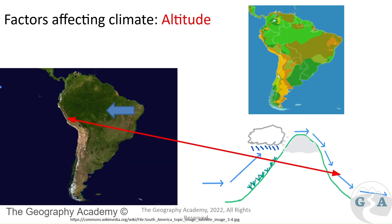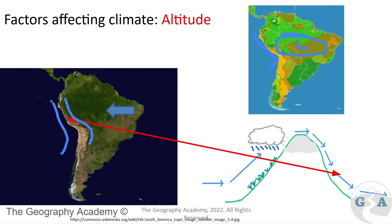We can see this happening with the coast of South America, where arid environments follow the coastline all the way down. A few things are happening: you've got the Andes Mountains separating the rainforest from the desert, as that side has an area of low pressure. It also has a cold current coming up the coastline which helps create a high pressure zone along the coastline, meaning the aridity can extend to really high latitudes, right up to the equator.